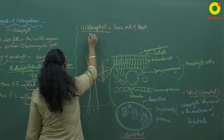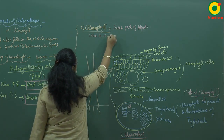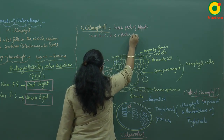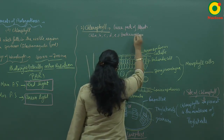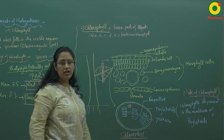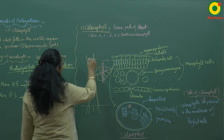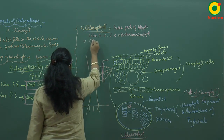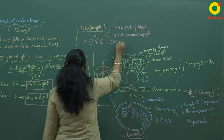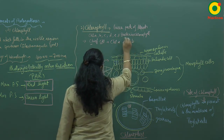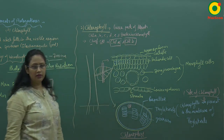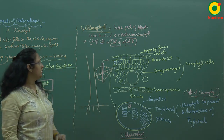Chlorophyll is of many types: chlorophyll A, B, C, D, E, and bacteriochlorophyll. Out of these six types, the chief chlorophylls which mainly perform photosynthesis are chlorophyll A and chlorophyll B. They are the main pigments which perform photosynthesis.